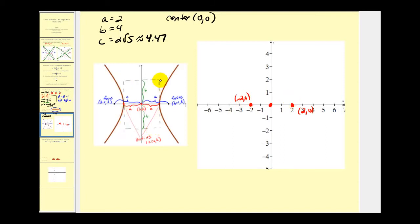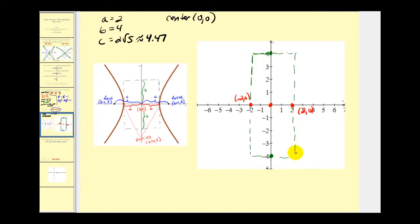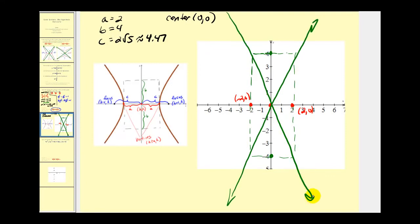Next, we'll construct the rectangle to sketch the asymptotes. We went left and right a units; now we go up and down b units. Since b equals 4, we go up to 4 and down to negative 4. We use these four points to form the rectangle, then sketch the asymptotes through the diagonals. The hyperbola starts at each vertex and approaches the two asymptotes.